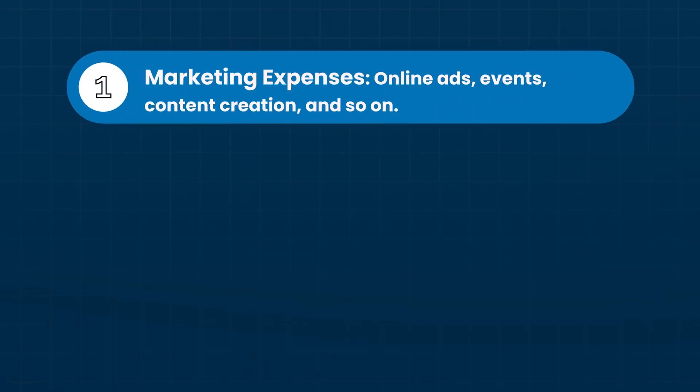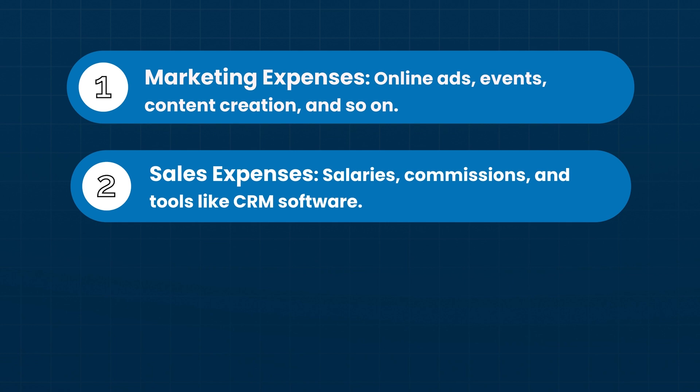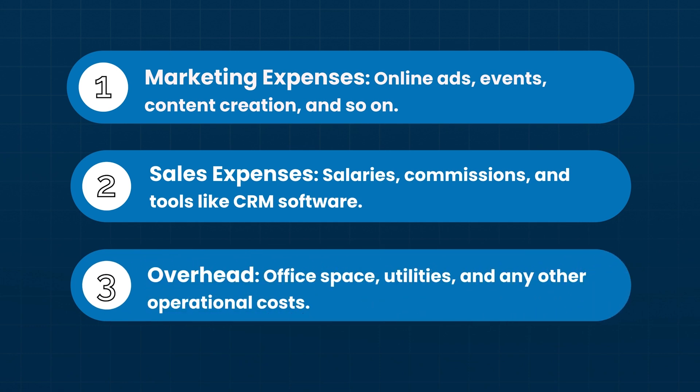It's also going to determine the long-term value of your company. If you've got a scalable, repeatable sales process that's highly efficient, your value as a business is going to go up significantly. So going back to the CAC calculation: marketing costs include online ads, events, and content creation; sales expenses include salaries, commissions, and tools like CRM software. If you want to get highly precise, you can allocate a percentage of overhead — say 10% of office space if your sales and marketing team is 10% of your workforce. If not, you can skip that and just use direct sales and marketing costs.